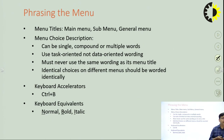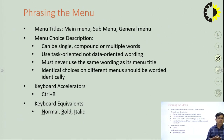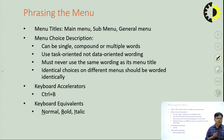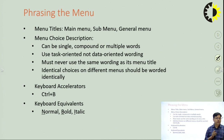Regarding phrasing of menus: menu titles, main menus, submenus, general menus, and menu choice descriptions can be single, compound, or multiple words. Use task-oriented — not data-oriented — wording. Task-oriented wording should be used carefully so that users are not confused by menu titles. Key accelerators must be provided to expert users, such as Ctrl+V, Ctrl+I, Ctrl+C, and Ctrl+P. Provisions for these accelerators must be part of the menu design.